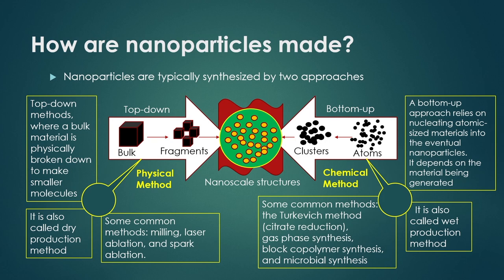The bottom-up approach converts atomic-sized materials into nanoparticles by nucleation of atomic structures, and is called the wet production method. There will be certain chemical reactions and changes of materials in the presence of other chemicals, giving nano-size particles through different phase changes. Common methods include the Turkevich method, citrate reduction method, gas phase synthesis, block co-polymer synthesis, and microbial synthesis.